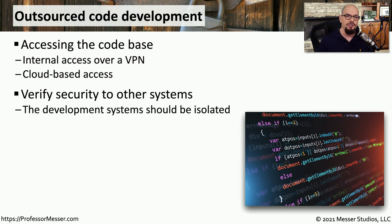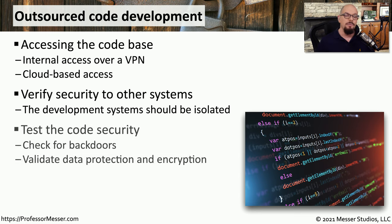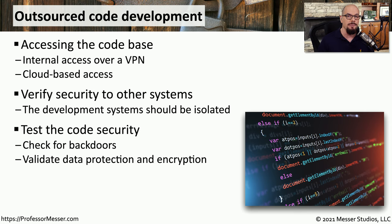The production services should be on a separate isolated part of the network, and the development team should not have access to the production side of the network. Once the code has been completed, it needs to be checked to make sure there are no other ways to gain access into that application, and you want to be sure that the data being used by that application is stored in a secure way and transmitted across the network in encrypted form.